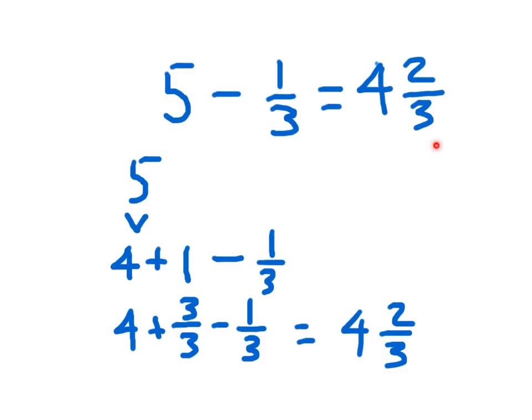Which makes sense. If you have four and two-thirds, you add it together with one-third, you do get five. That was that check. Inverse operation of subtraction there.